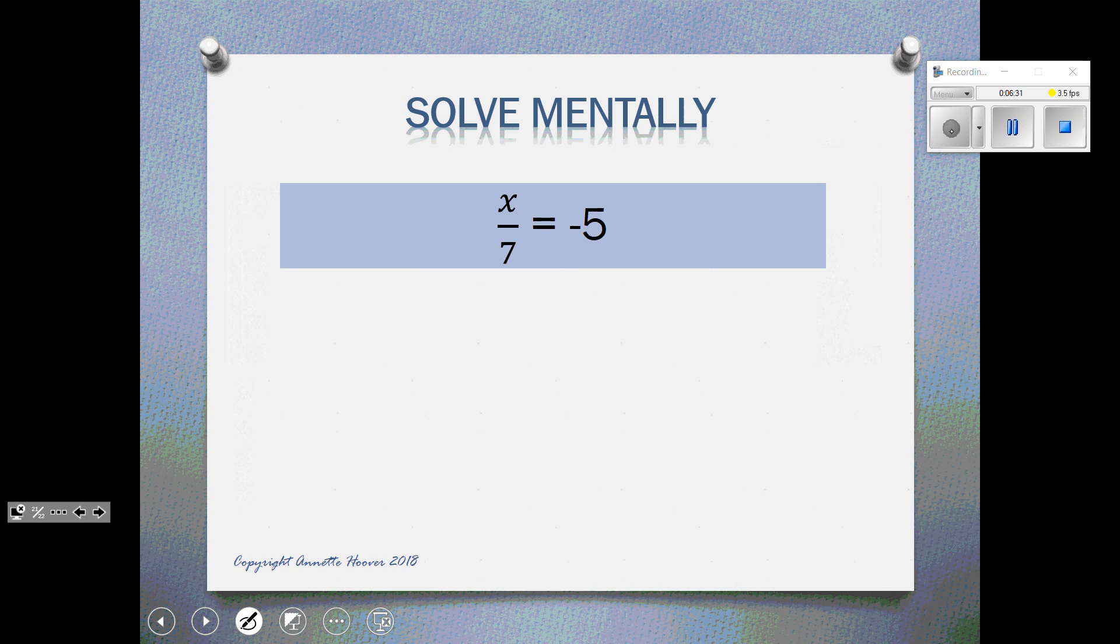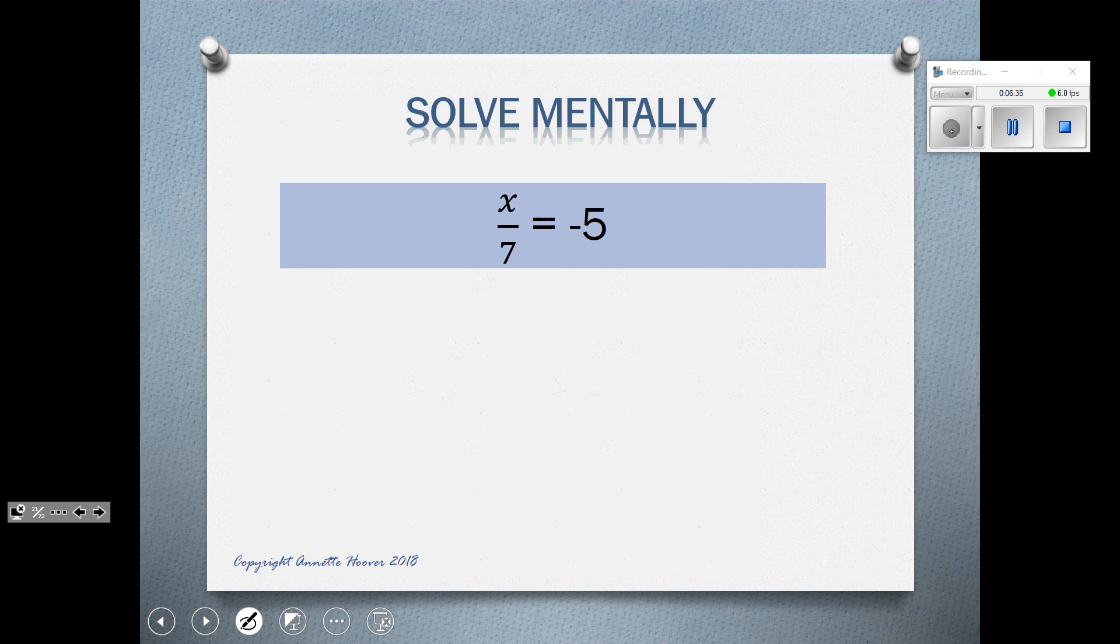Here, x is being divided by 7, so in order to get the variable by itself, we want to use our inverse or opposite operations. The opposite of division is multiplication, so we're going to be multiplying both sides by 7. We're multiplying negative 5 times 7, multiplying with one negative makes negative, so x would be equal to negative 35.